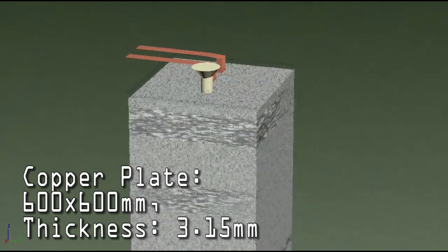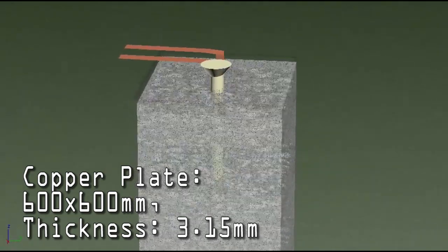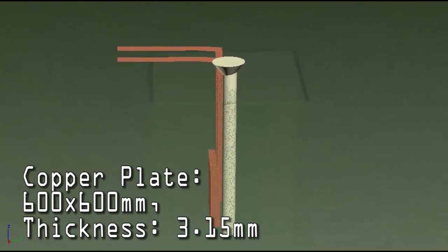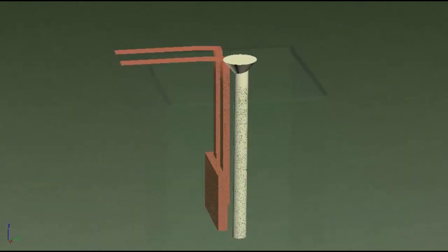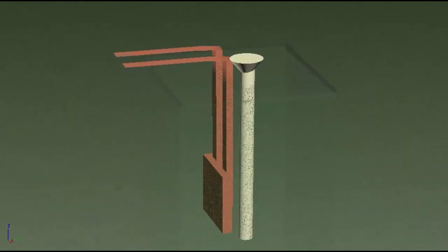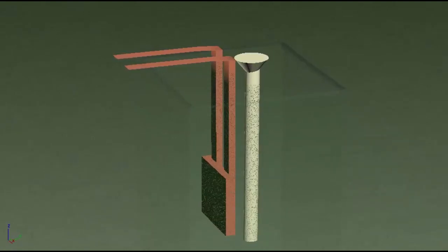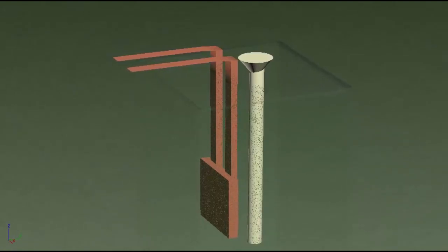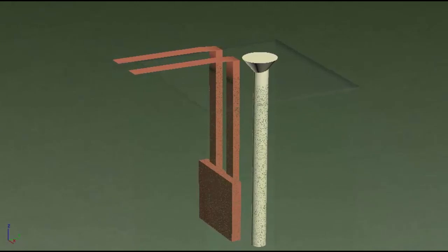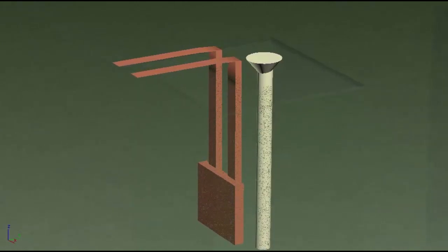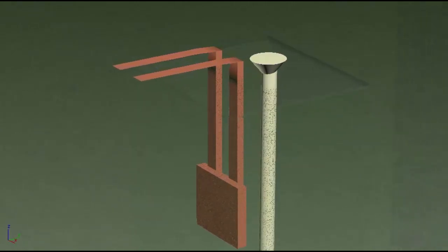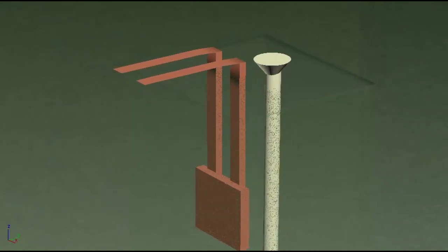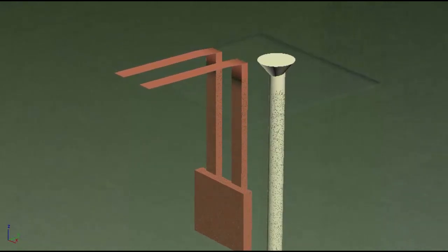Two GI strips of size 550 mm by 6 mm are fixed to this copper plate as shown. These strips should preferably be welded to the copper plate.